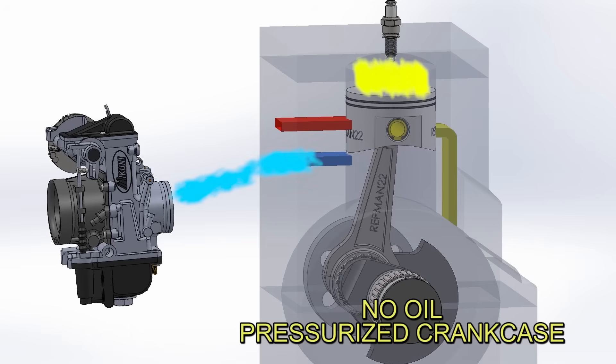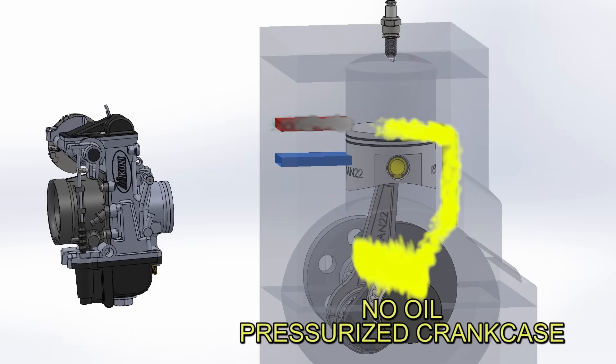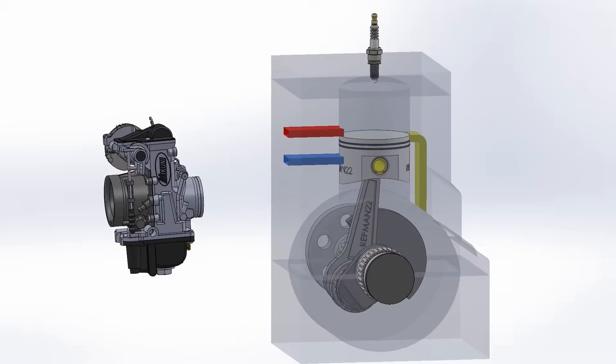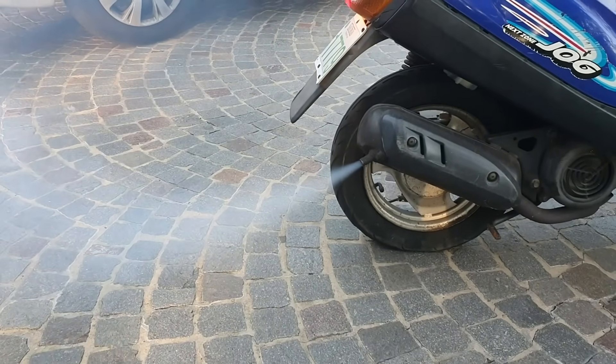The second problem is that the crankcase must be pressurized to allow intake and then compression into the cylinder. This disables oil from being stored in this location. Oil is usually mixed with gasoline, and in the most sophisticated ones, a pump is used to inject oil into the crankcase. In any case, this oil ends up burning, causing notorious white smoke.